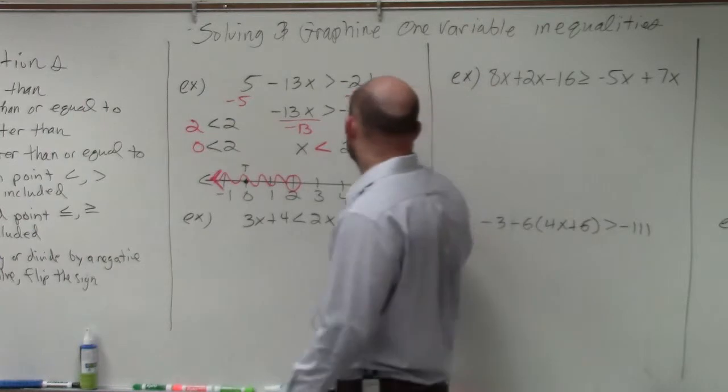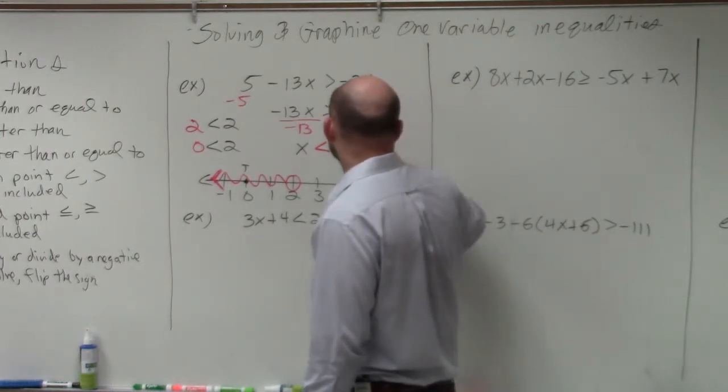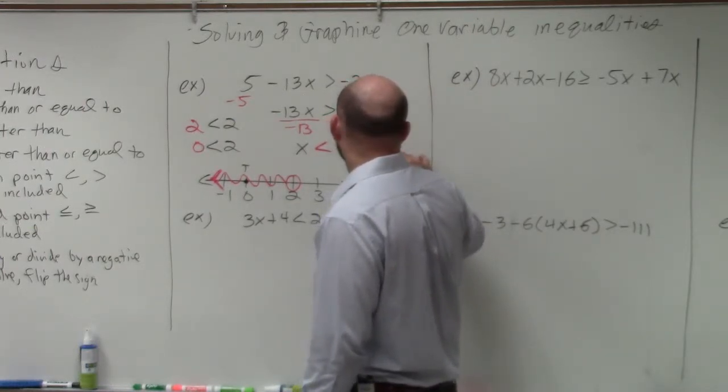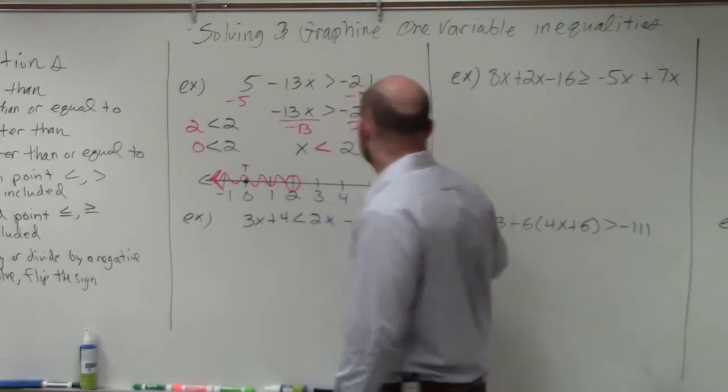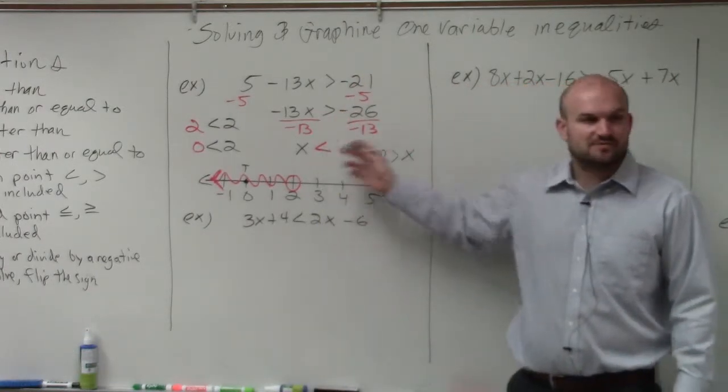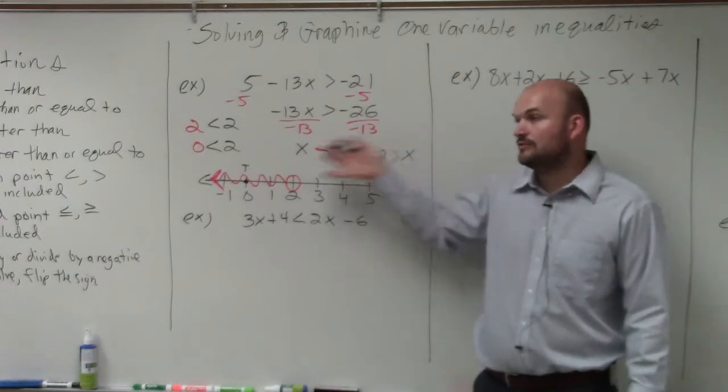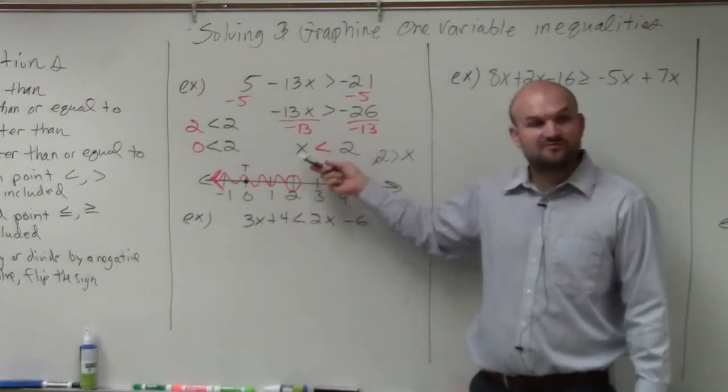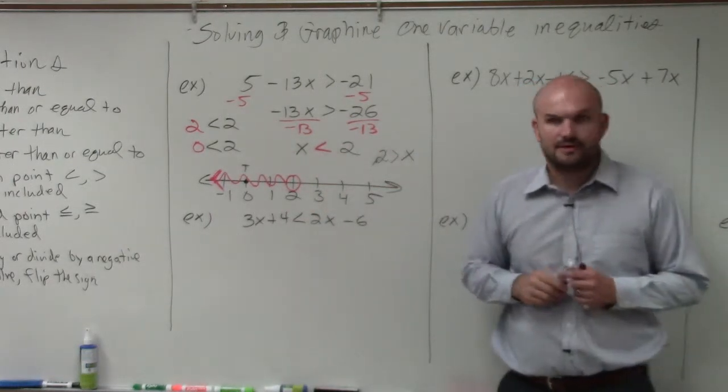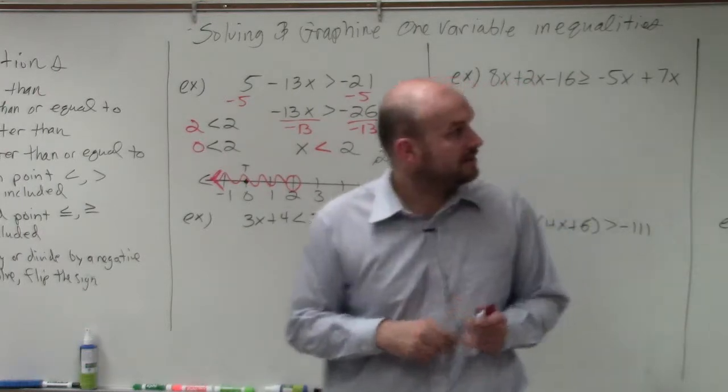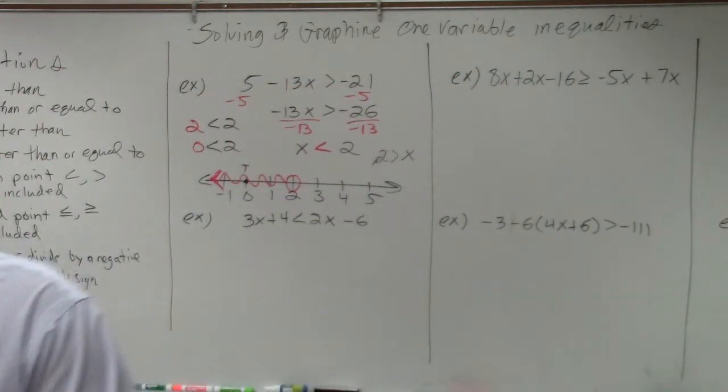If this was switched around, like 2 is greater than x, this is the same thing - I just flip-flopped them. So make sure if you're going to follow the arrow of the inequality, make sure your variable is on the left-hand side. But that's how you do that one.